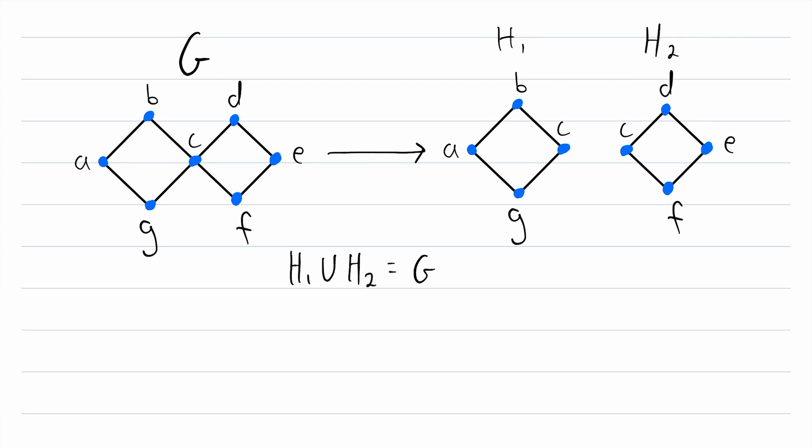And then lastly, they have no edges in common. They have this vertex C in common, but they have no edges in common. All of those facts together mean that this is a decomposition of G.